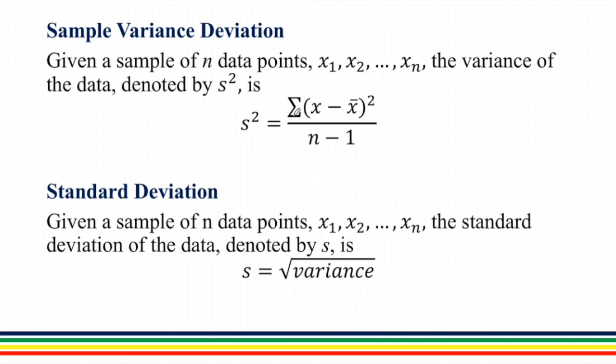Sample variance deviation. Given a sample of n data points x1, x2, up to xn, the variance of the data denoted by s squared is equivalent to summation of (x minus x-bar) squared over n minus 1. This is the equation for variance. And the standard deviation is simply the square root of the variance and is denoted by the variable s.